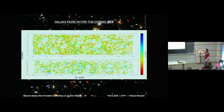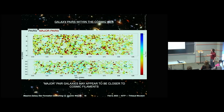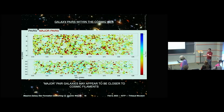This shows the distance to the filament for the two survey fields, and you can see that pairs concentrate along the cosmic filaments. In red, you can see that the major pairs — galaxies of similar and larger masses — are even closer to the filaments. It is qualitative rather than quantitative, but I let you judge.